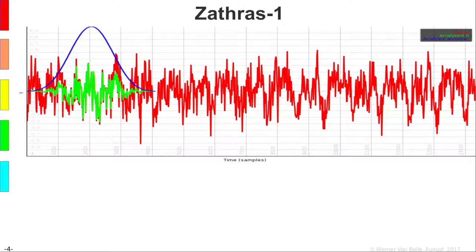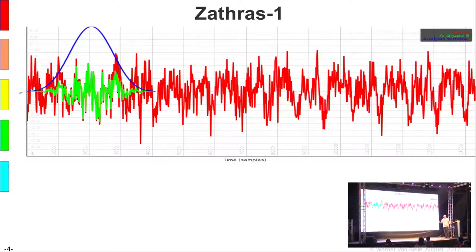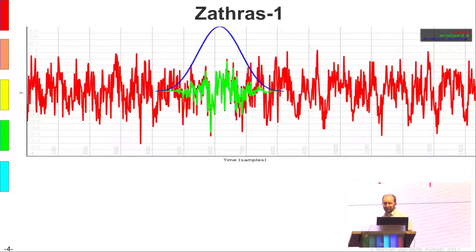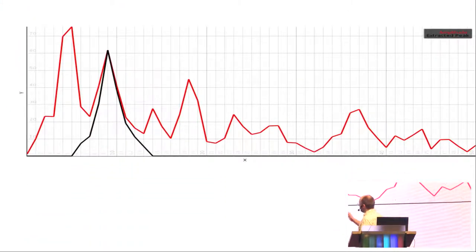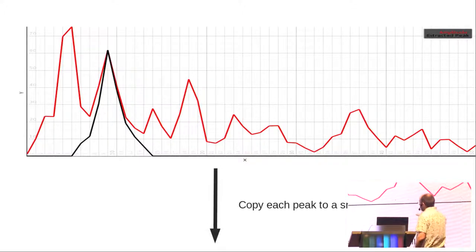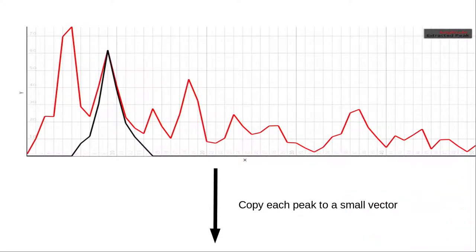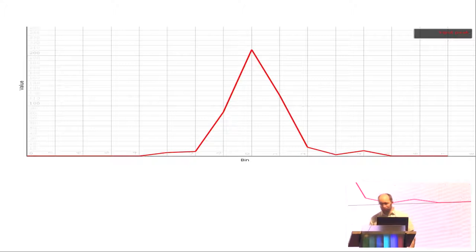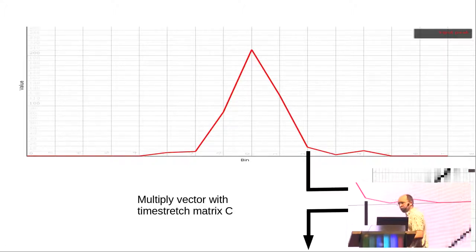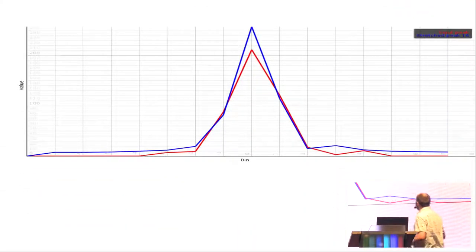The magic happens between taking the input segment and re-synthesizing it. This is done first by converting one segment to the spectrum by means of Fourier transform. In such a spectrum, horizontally you have all the frequencies and vertically you see how much energy is present. We look at individual peaks, copy them to a small vector, and each peak is then multiplied with a time-stretch matrix C, which creates a new synthesized peak.